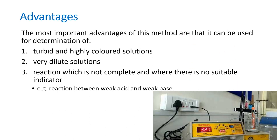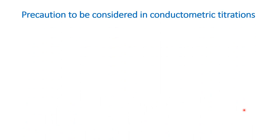Furthermore, in volumetric analysis, we cannot do a titration of a weak acid versus a weak base, but here we can do this titration and find the equivalence point. Here, it is still a titration — one solution is in the burette, another is in the beaker. We do not observe color change but instead observe the conductance. As conductance increases or decreases with addition of the titrant, we can plot a graph accordingly.